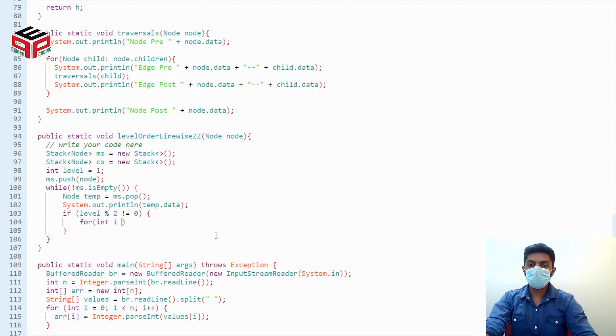For i equals to zero, i is less than temp.children.size, i++, cs.push temp.children.get(i).